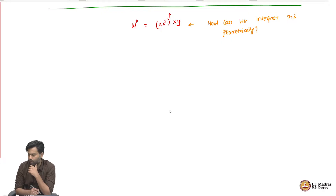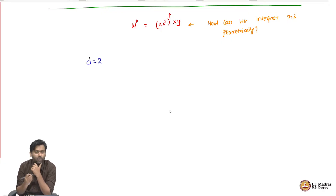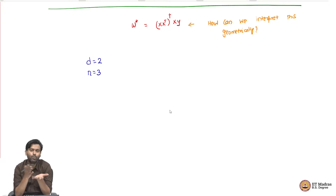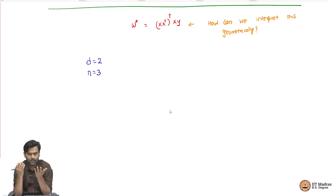For this purpose, we are going to treat D, the number of features, as two and the number of data points as three. Let's say we just have three points — three people — and for each of them we are measuring height and weight: two features. That's the setting we are in.